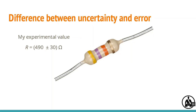This is me saying that my best guess at the resistance is 490 ohms, but it could be as low as 460 or as high as 520 ohms. I'm confident it's within that range. The plus or minus bit is the uncertainty. When written like this with units it's called the absolute uncertainty, as opposed to the percentage uncertainty.